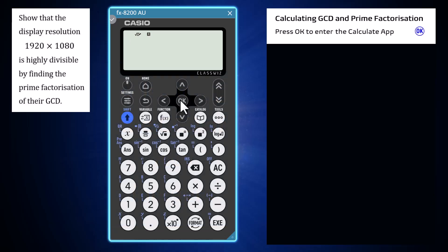This, combined with the H200's ability to represent numbers in prime factor format, can be used to complete a number of mathematical tasks, including showing that the display resolution 1920 by 1080 is highly divisible.